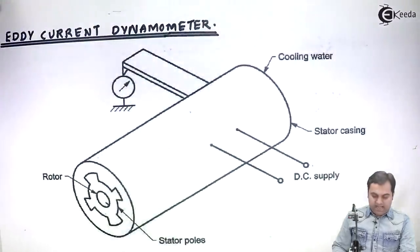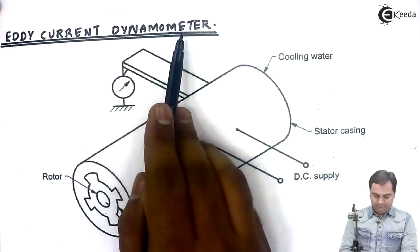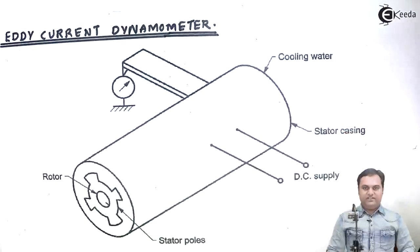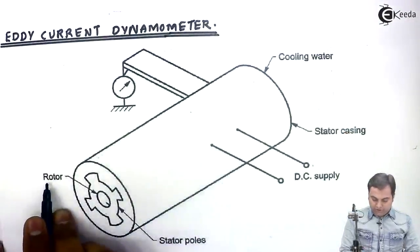In this video, I will show the construction and working of an eddy current dynamometer. Here I have the diagram. The eddy current dynamometer consists of a rotor.